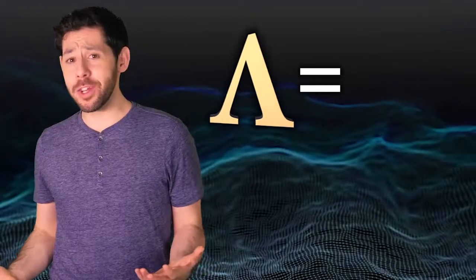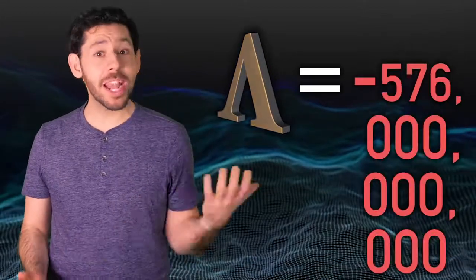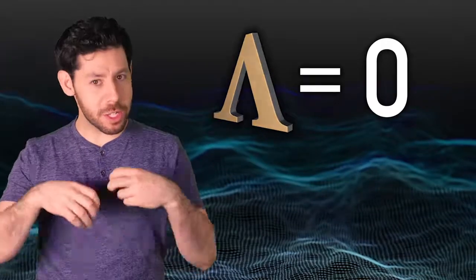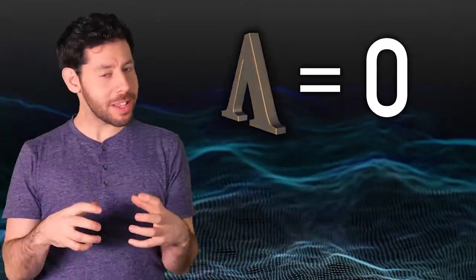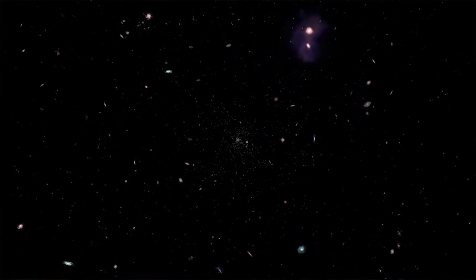If lambda were a negative number, like negative 0.2 or negative 7 or negative 576 billion, then its expansion would have slowed down and everything in the universe would have collapsed back in on itself. But if lambda were 0, then the universe wouldn't have exploded outward, it wouldn't have collapsed in on itself, it would just expand at a constant rate and look very much like it does today.